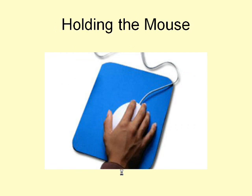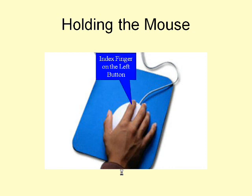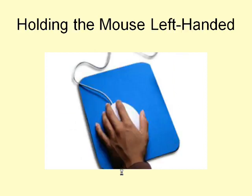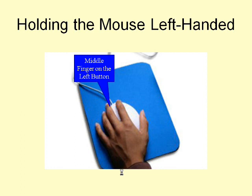Holding the mouse is simple. Just rest your right hand over it, with your index finger over the left button, your middle finger over the right button and your thumb to the side. If you are left handed you can rest your left hand on the mouse, using your middle finger for the left button and your index finger for the right button.